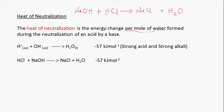The chemical reaction taking place in this case can be written as H⁺ plus OH⁻ producing H₂O. The enthalpy change for this reaction is minus 57 kilojoules per mole, and this reaction is exothermic because the enthalpy change has a negative sign in front of it. We can use either of these two equations to represent the heat of neutralization of a strong acid and a strong alkali.